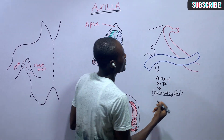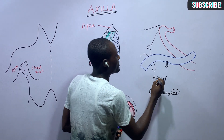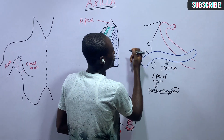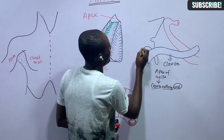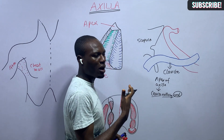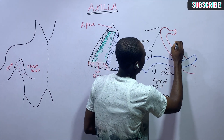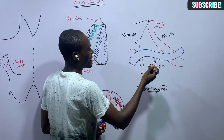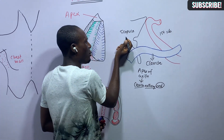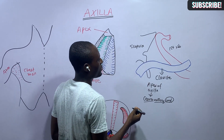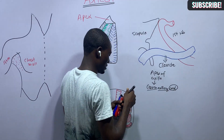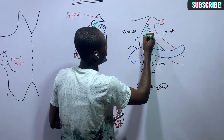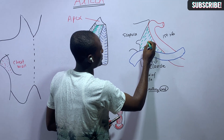Let us look at the boundaries of the apex. The anterior boundary of the apex is the clavicle. The posterior boundary is the superior border of the scapula. The medial boundary is the first rib. So there is a canal bounded anteriorly by the clavicle, posteriorly by the scapula, and medially by the first rib — and this region is called the cervical axillary canal, or the apex of the axilla.